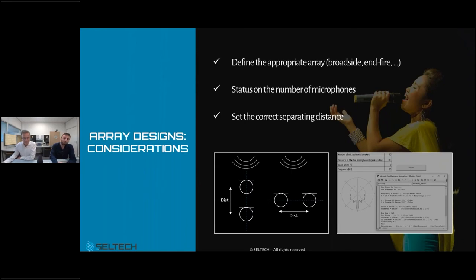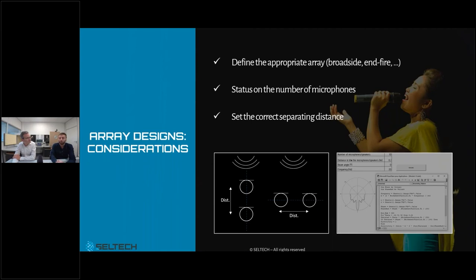For a one-dimensional microphone array, the first step is to select a configuration — the two most popular being the endfire configuration and the broadside configuration. The main difference is the direction of the incoming wave relative to the array, allowing different directivities. You then need to determine the correct number of microphones and the correct separation distance, using known formulas from the literature computed in Excel, MATLAB, or equivalent software.